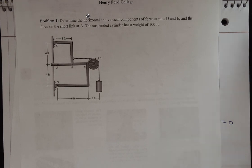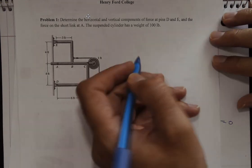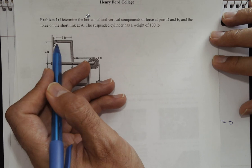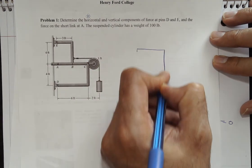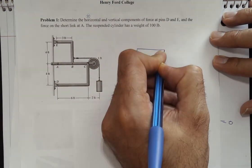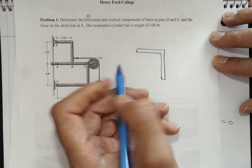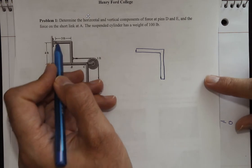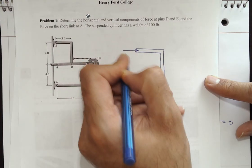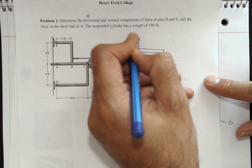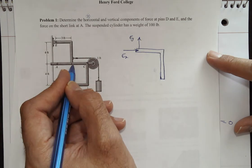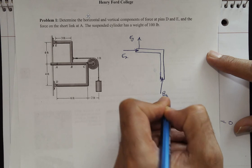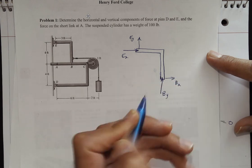Remember that you can break it down into as many small components as you want. We have a component going from E to B. When you remove a component, you have to replace it with reaction forces. For instance, at E I'm going to replace it with EX and EY. At point B, I have a pin, so I'm going to put BY and BX.